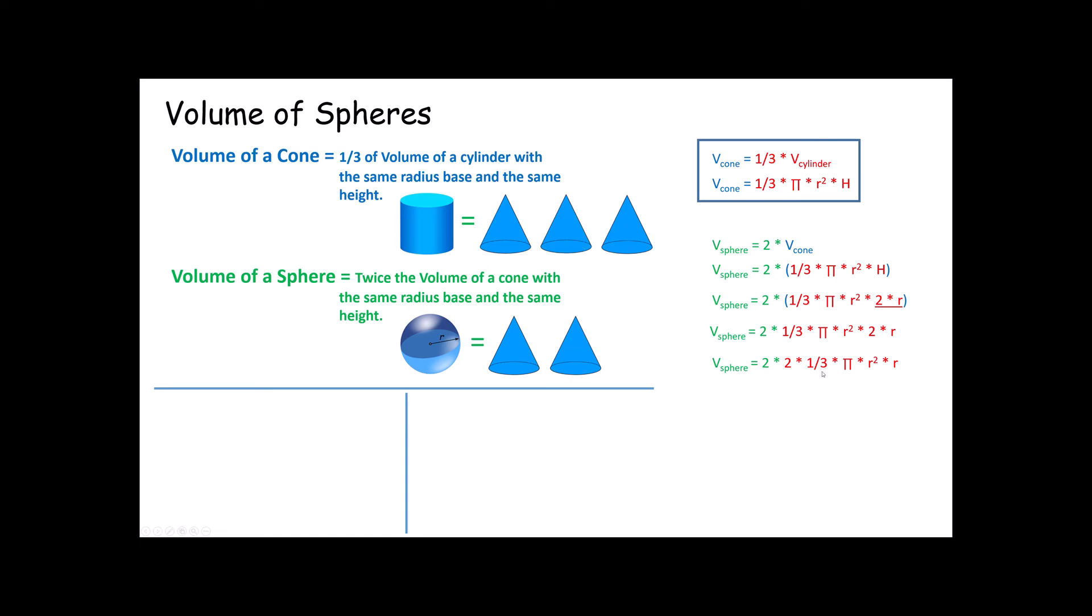Speaking of grouping, we did say the associative property says I can regroup these however I want. So I'm going to group my numbers together, leave my pi in the middle, and then I'm going to group my radiuses together. Why do I do that? Well, two times two times one third is four thirds.